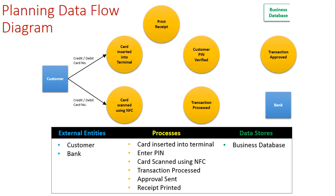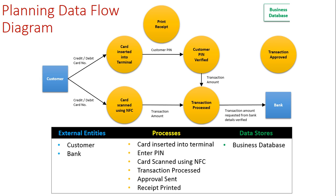The card details can come through either the card being inserted or through the NFC option. With the card inserted in the terminal, the next step is to enter the PIN — but that is not necessary if you use NFC. After this step, whether you've gone NFC or card insertion, both paths lead to processing the transaction. The transaction amount is sent for processing. The bank is then communicated with, the amount is requested, the transaction is approved, and funds are transferred. Once funds have been transferred and approved, the business database records the payment, then sends approval.